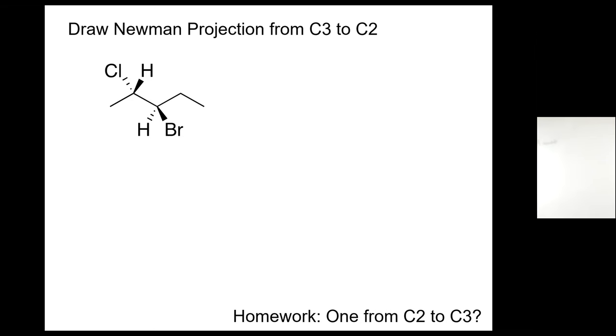Now the question is, which one of these carbons is going to be C2 and C3? So that way you need to find, you need to know that's a five-carbon containing system, a pentane, but we need to number from the 1, 2, 3, 4, 5 that way.